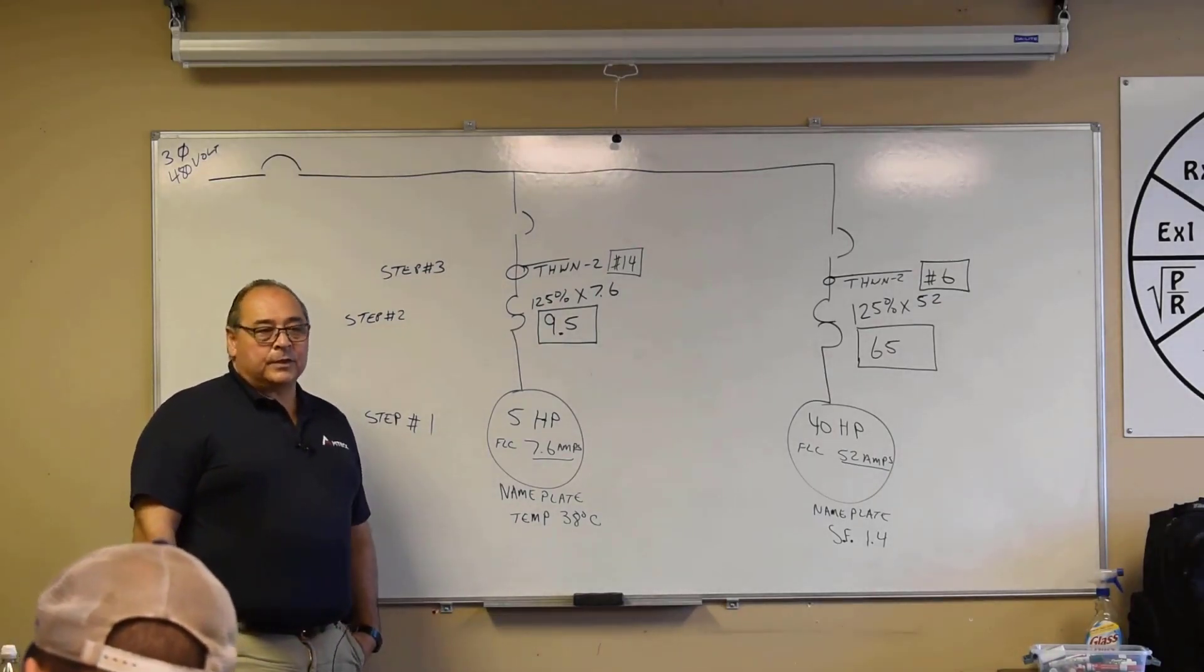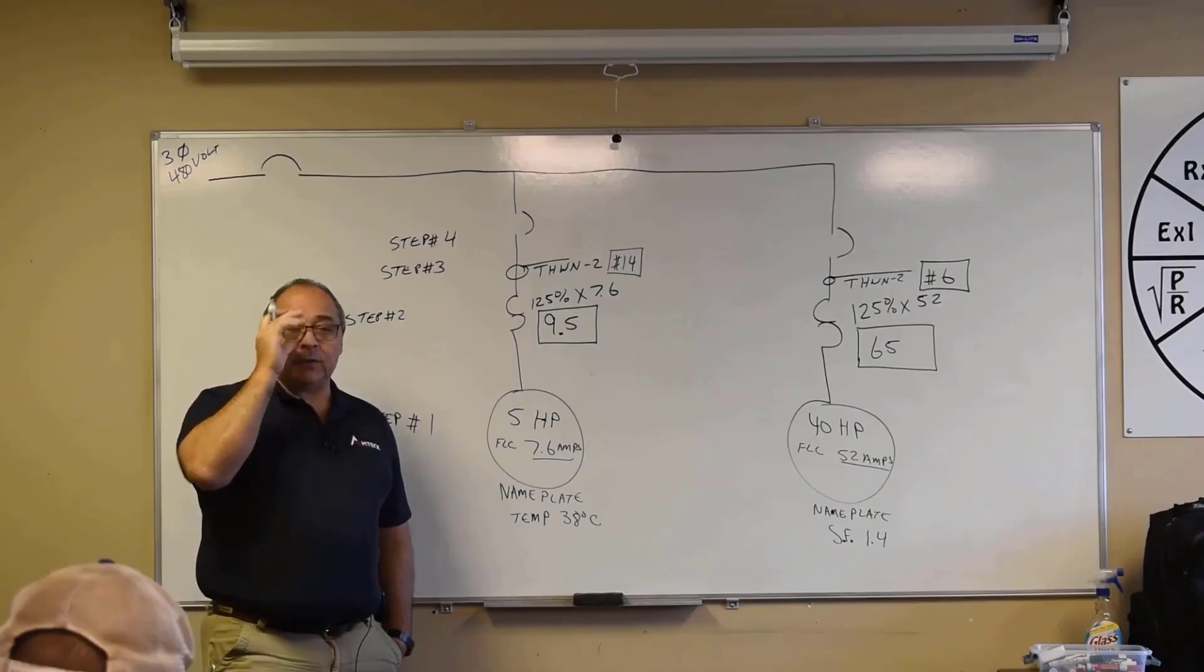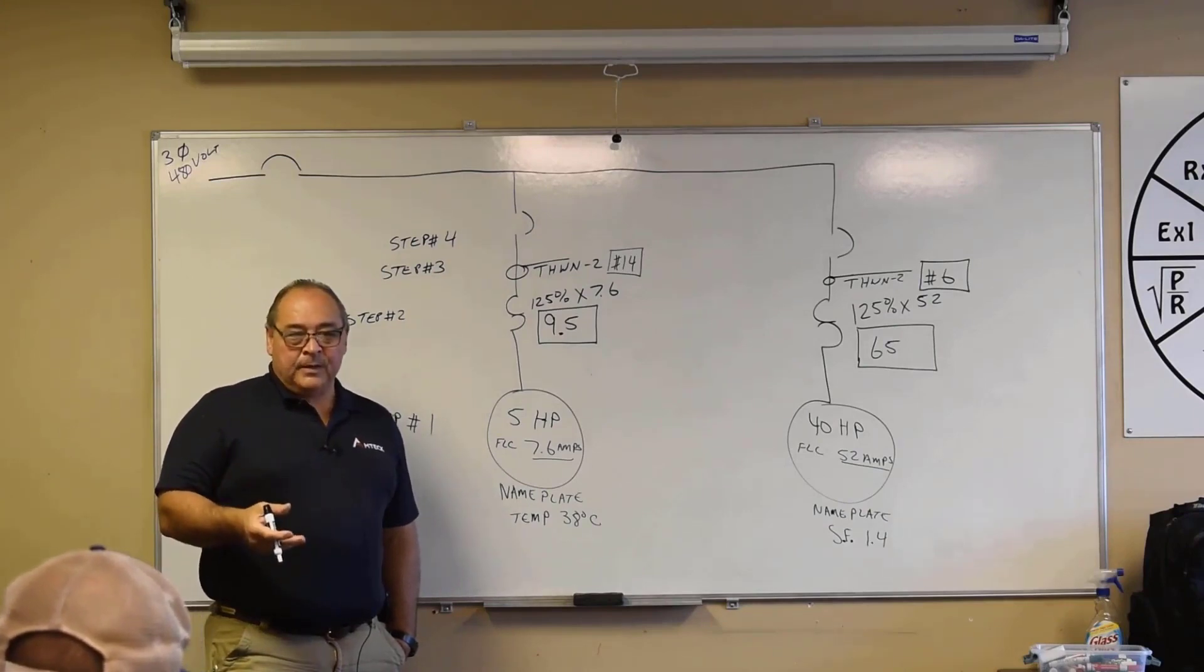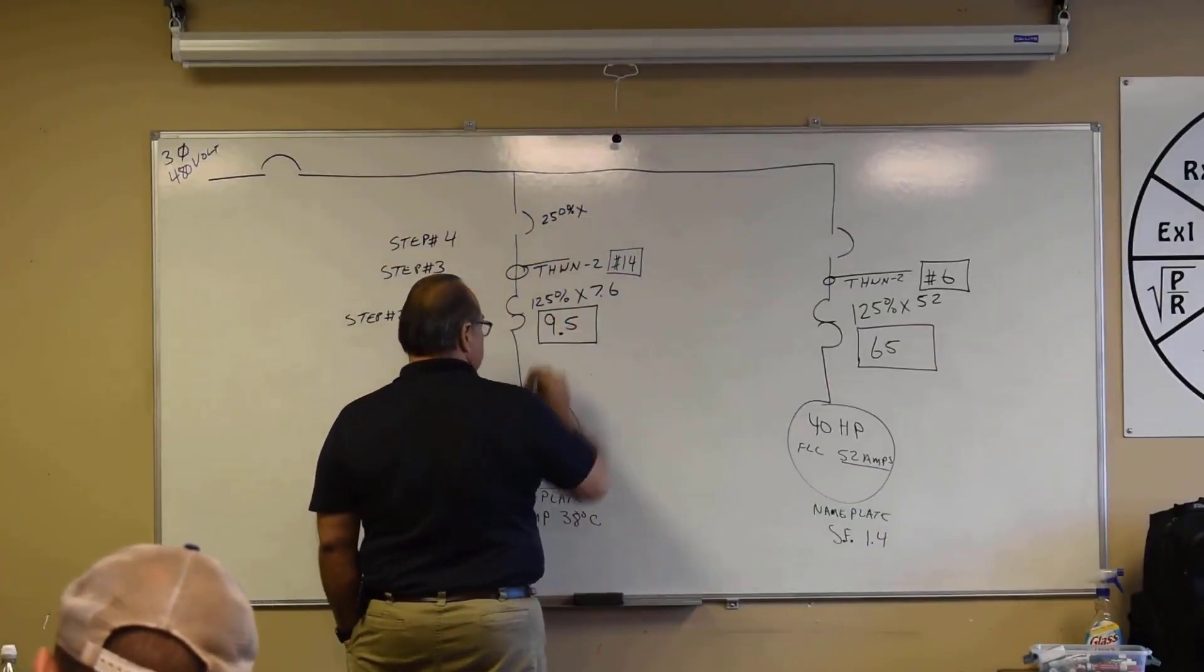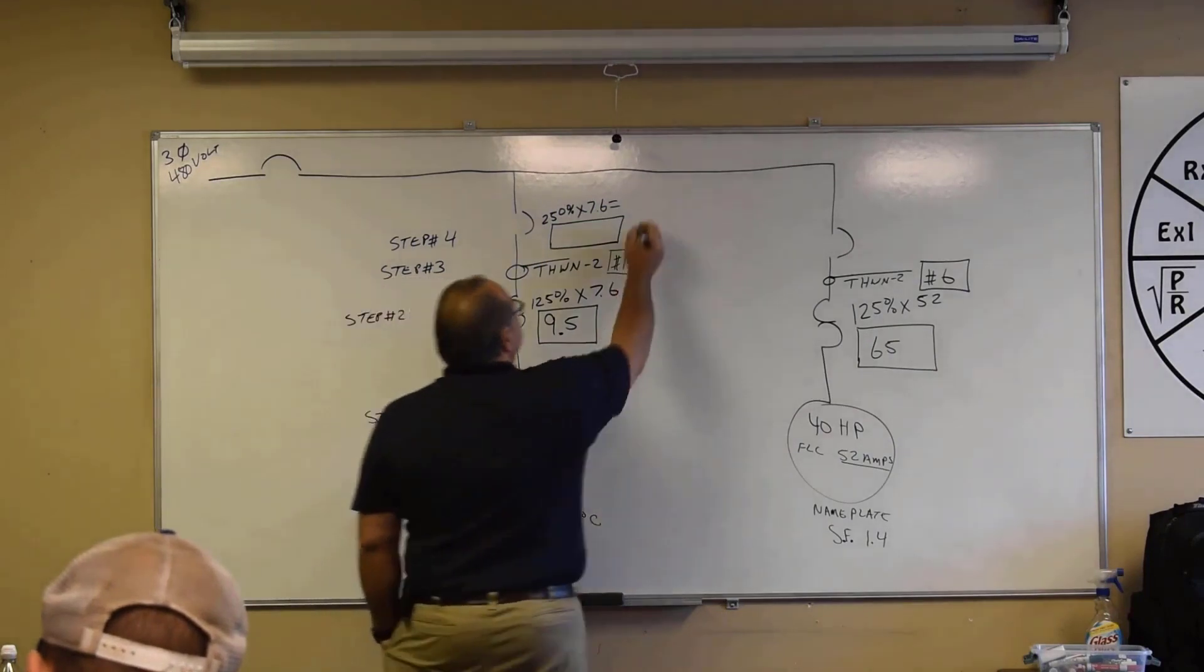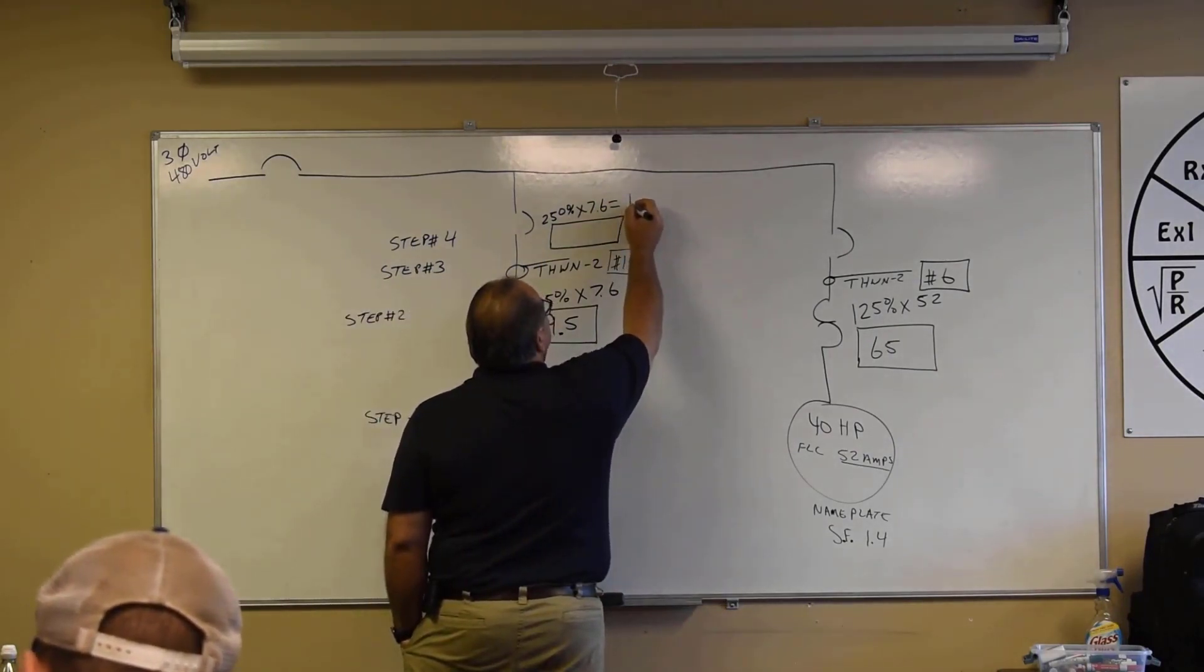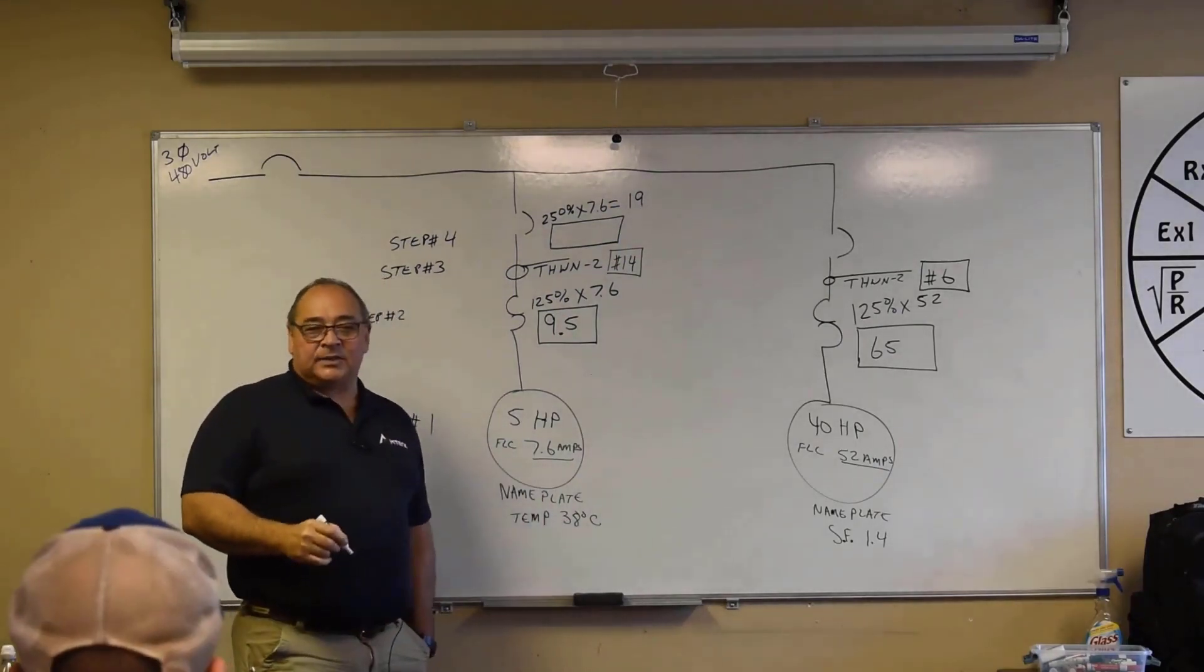Then the test question will provide you with which style fuse or circuit breaker we're going to use for step number four. So step number four sizes that fuse or circuit breaker. Since we actually have a symbol that represents a breaker, we'll use the inverse time circuit breaker, which is a standard everyday circuit breaker. What is our percentage for that? For an inverse time circuit breaker, 430.52 table, not an instantaneous trip, but the inverse time, 250 percent, right? So 250 percent times our full load current, remember, 7.6, right? What's that equal? 19, even got me some change. 19 even. All right, he's good. So 19 is not a standard fuse or circuit breaker size. Well, what can we do? What do we got to do?